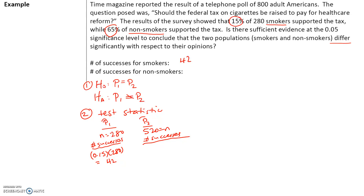The number of successes for non-smokers: 65% of them support the tax, so we multiply 0.65 times 520, which gives us 338. In this case, a success is any individual who supports the tax. So we have 42 successes for smokers and 338 successes for non-smokers.